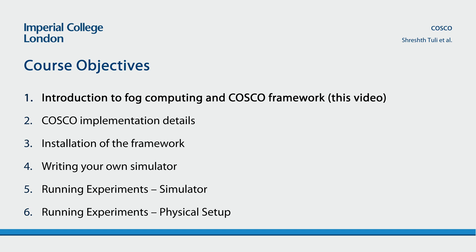Second, we will discuss the implementation details of the COSCO framework, touching upon the code structure and various modules provided in the code. Third, we will discuss how to install the framework in your system. Fourth, the video will cover how to add your own custom scheduler in COSCO. For this course, we will consider a very simple extension of a threshold-based scheduler optimized using co-simulations. The fifth and sixth parts deal with how to conduct experiments on simulated and physical deployments, respectively.